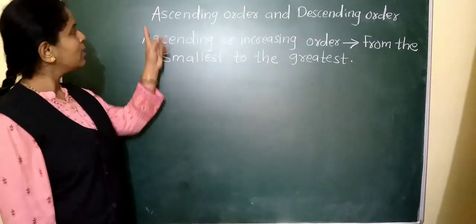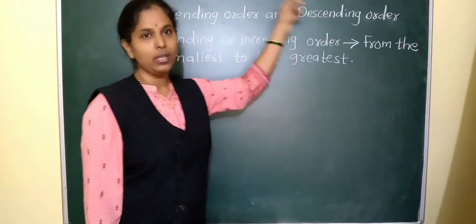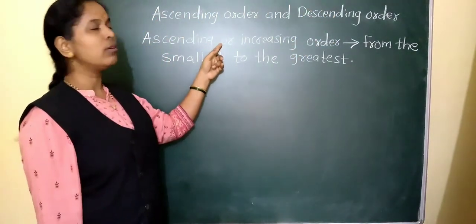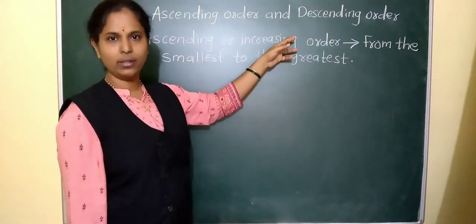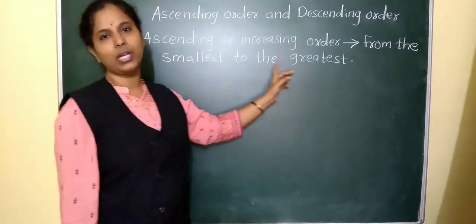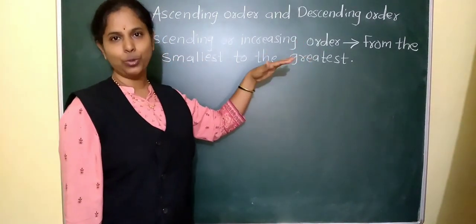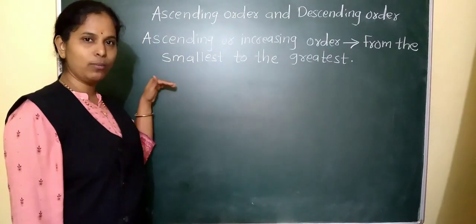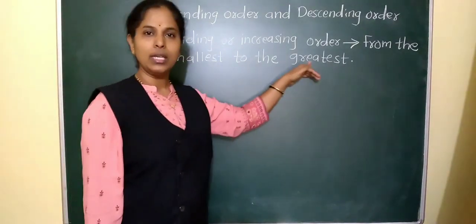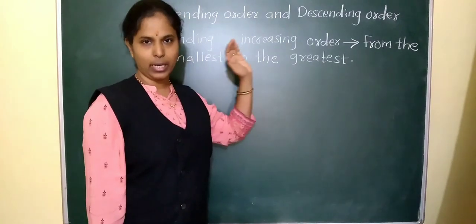Next is ascending order and descending order. Ascending order is also called increasing order. It means we arrange the numbers from the smallest to the greatest.